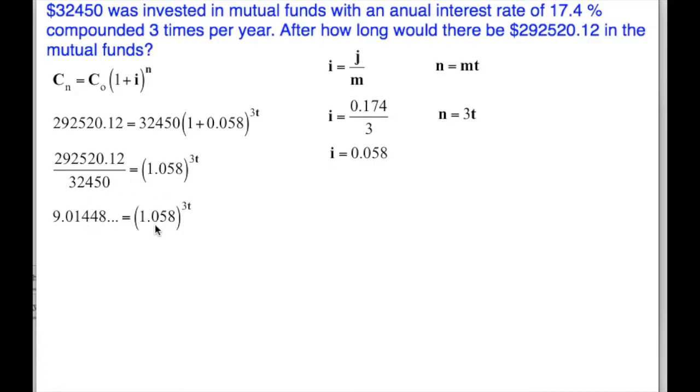We're going to express this in logarithmic form. Our old base is going to be the base of the logarithm, and we're going to be taking the logarithm of the 9.01448 to the base 1.058. And it's going to be equal to our exponent. It's equal to 3t.